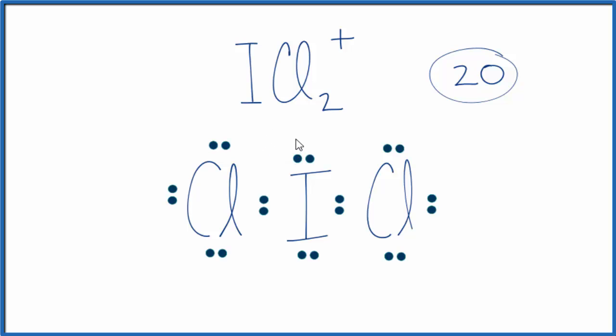If we check the formal charges, we'll find that each chlorine atom has a formal charge of 0, and the iodine in the center has a formal charge of 1+. We'd expect the iodine to have the positive formal charge since it's less electronegative. That 1+ matches the ionic charge, so this is a good Lewis structure for ICl2+. Let's put brackets around it since it's an ion, and put a positive sign on the outside.